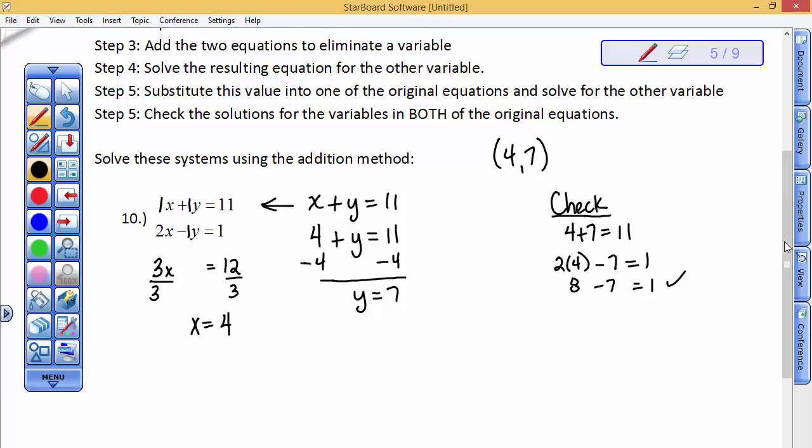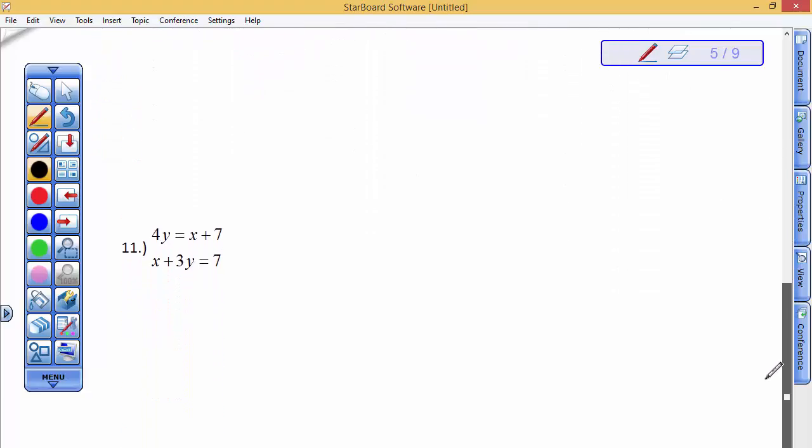Okay, so this problem right here is not in standard form. So you see this x that's on the right hand side? I'm going to transpose it and move it over to the left side and make it a negative x next to this 4y. So I've moved it, so I have now a negative x plus 4y equals 7, and a positive x plus 3y equals 7.